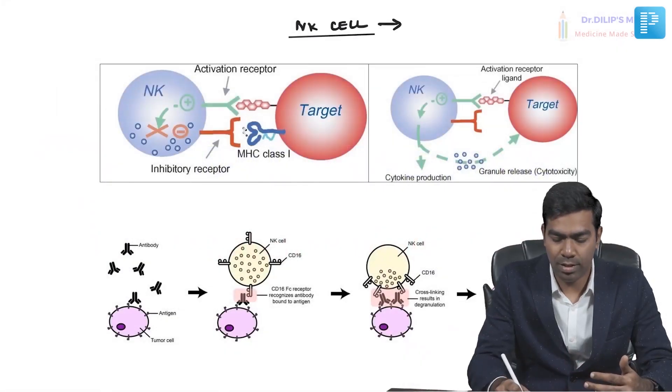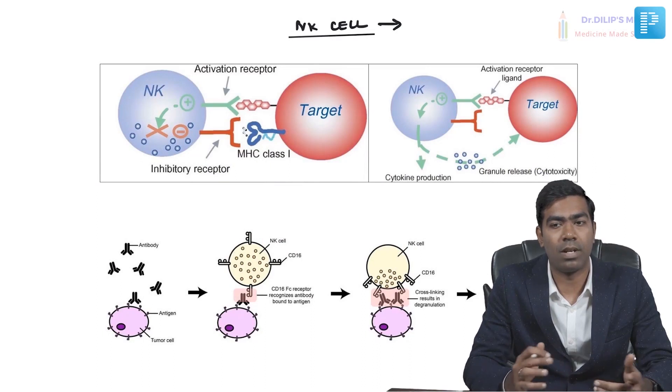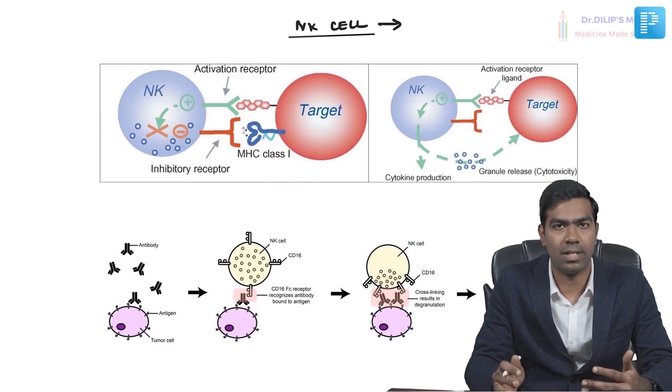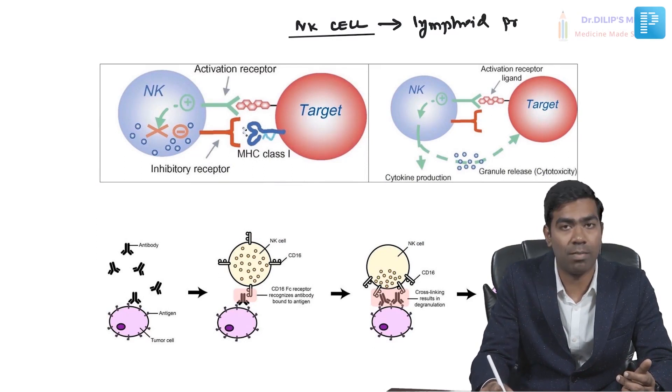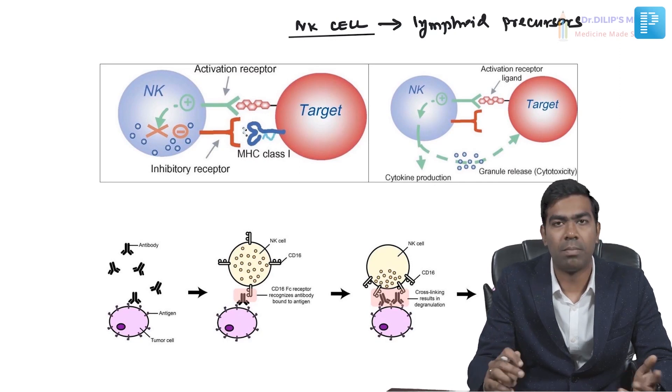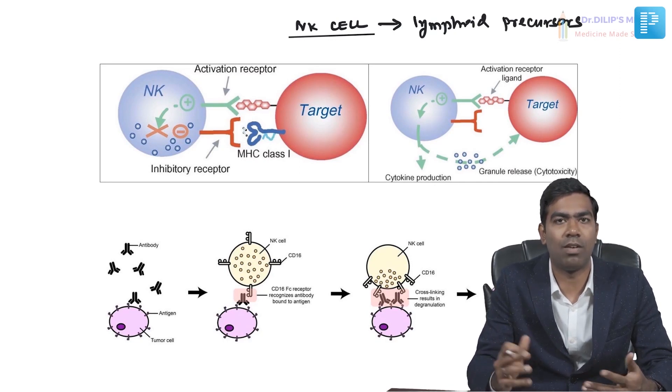Natural killer cells do not come from the B cell lineage or the T cell lineage, but they do arise from lymphoid precursor cells — they are from the lymphoid lineage. The exact mechanism of their origin and maturation is not clearly understood; even many immunology books do not cover the exact mechanism of maturation and development of natural killer cells.